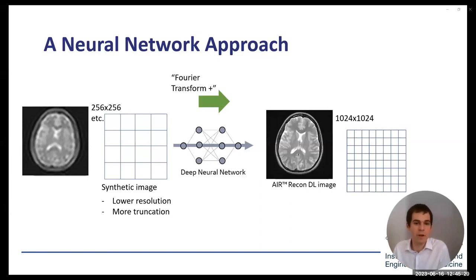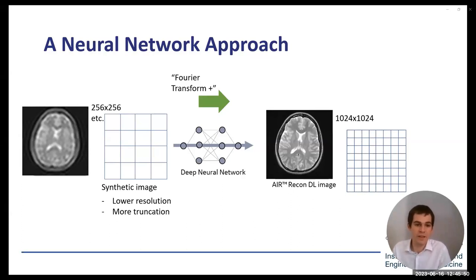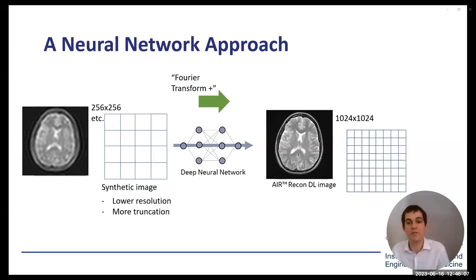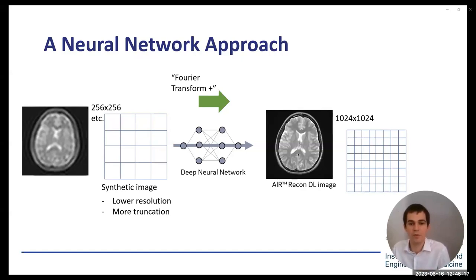To train these networks, GE collected a large number of high-resolution images — potentially 1024 or 512 — then synthesized lower resolutions by removing phase-encode and frequency-encode lines in K-space. Those synthetic images are then used to train the network alongside high-quality pairs. The deep neural network learns an advanced version of the Fourier transform, minimizing an error function to get as close as possible to those high-quality images.